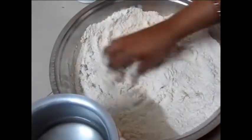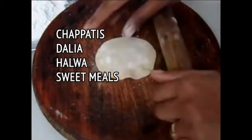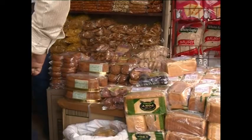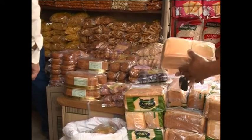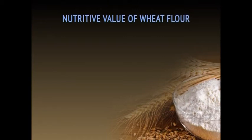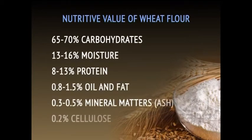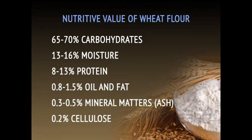The economic importance of wheat is that it is the second staple food of Indians, next to rice, consumed in the form of chapatis, dahlia, halwa, sweet meals, etc. It is used in the manufacture of bread, cakes, biscuits, etc. The nutritive value of wheat flour includes 65–75% carbohydrates, 13–16% moisture, 8–13% protein, 0.8–1.5% oil and fat, 0.3–0.5% mineral salts or ash, and 0.2% cellulose, making the crop highly valuable for humans.